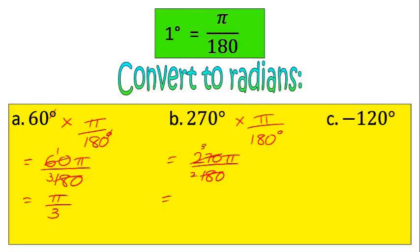Negative 120 degrees—same thing. I'm going to multiply by π over 180 degrees, which equals negative 120π over 180. And simplifying that, I get negative 2π over 3.